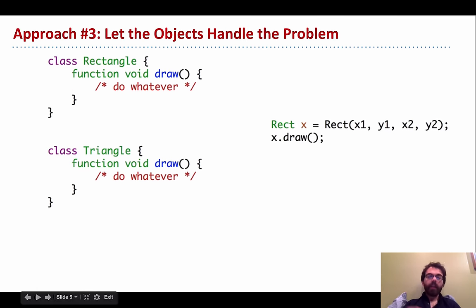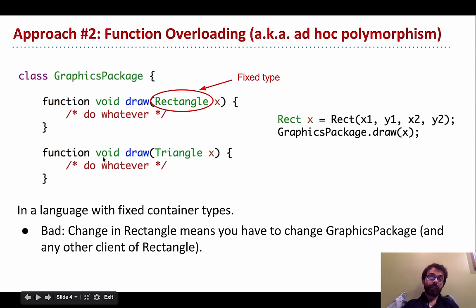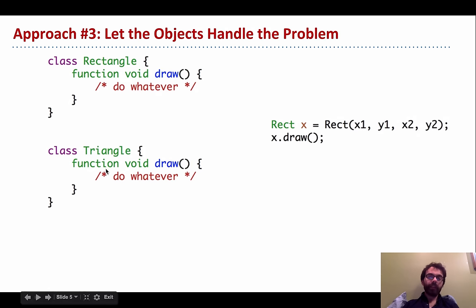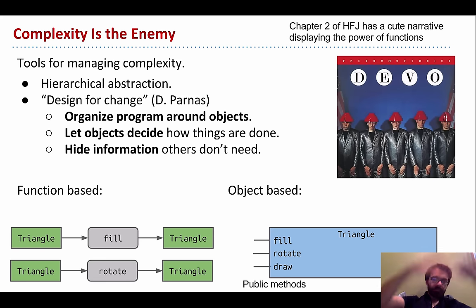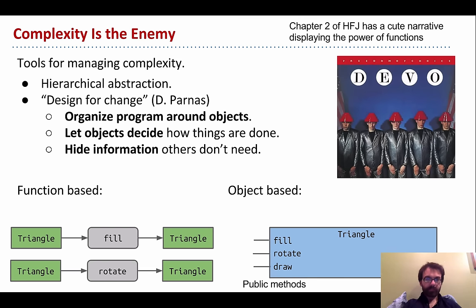A further step is to make a different class for each shape — rectangle, triangle — and package the draw function with the class itself as a method. Then we call it with x.draw(). That's more or less where we've gotten so far with Java, but it doesn't do everything we need.